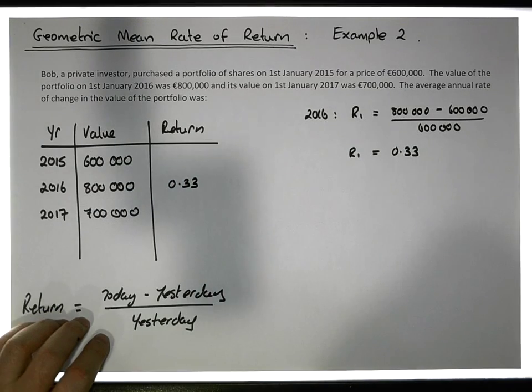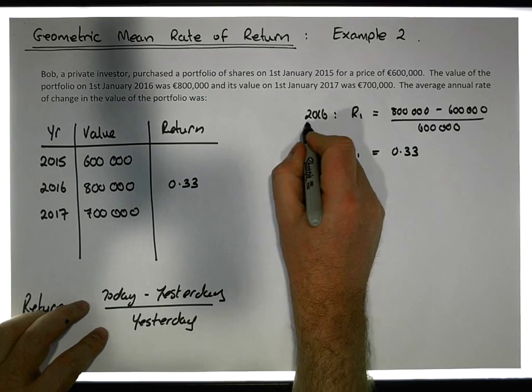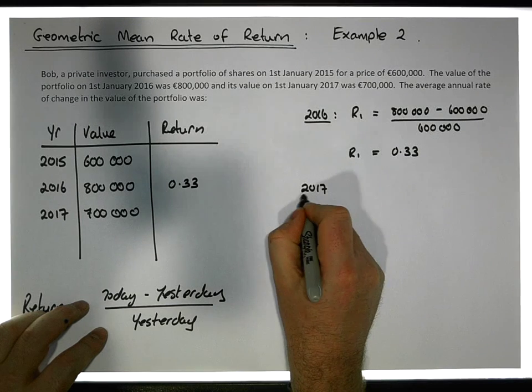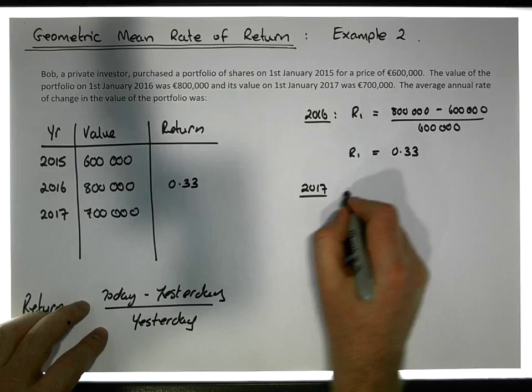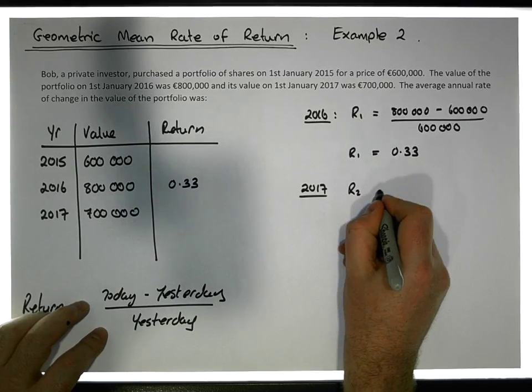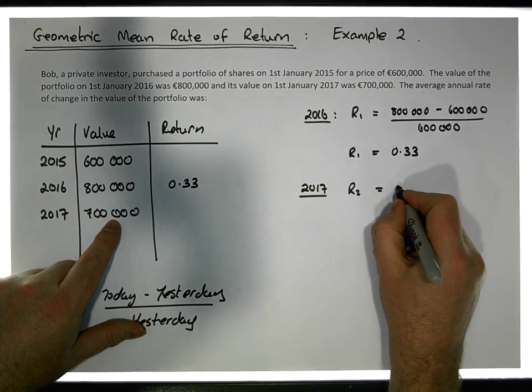What about 2017? What is the return between 2016 and 2017? Let's call this R2. R2 is equal to today's value which is 700,000.